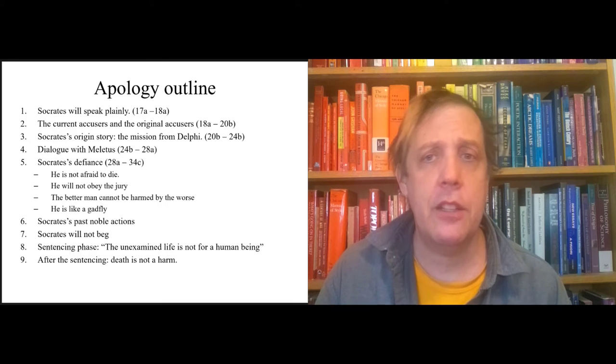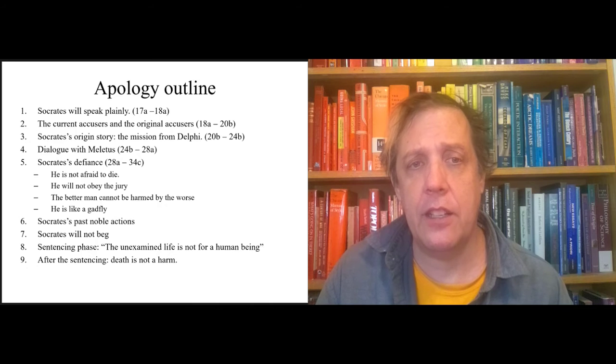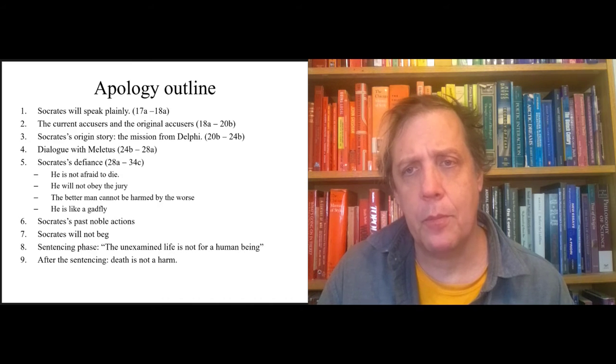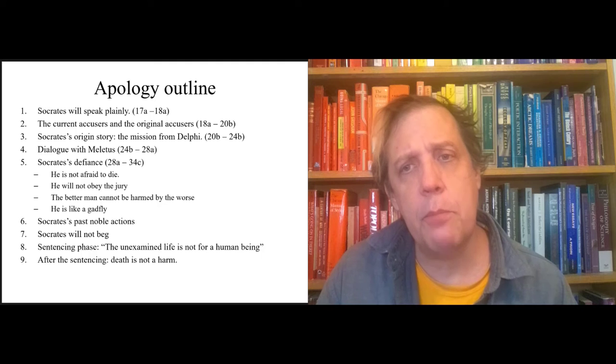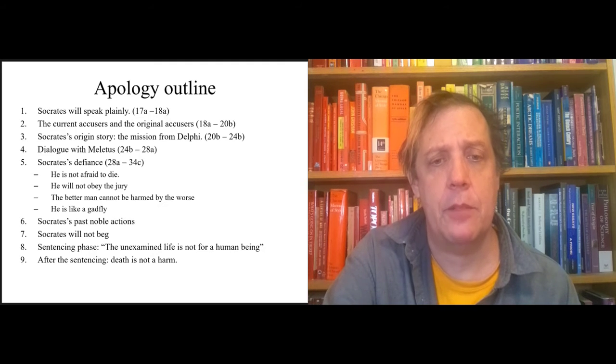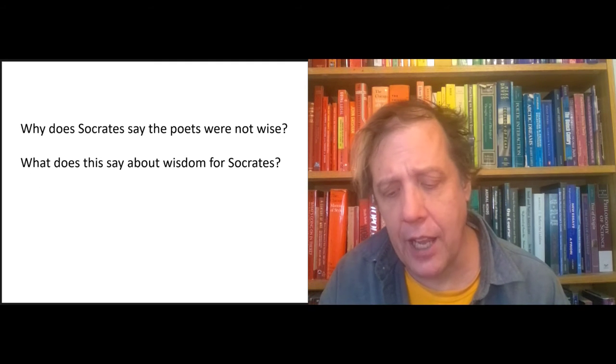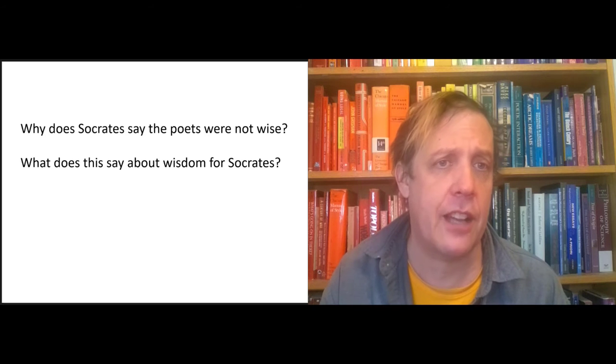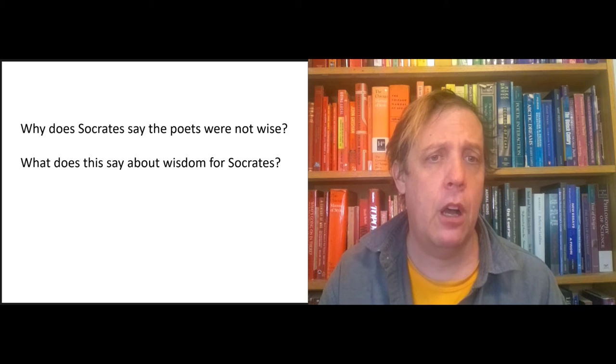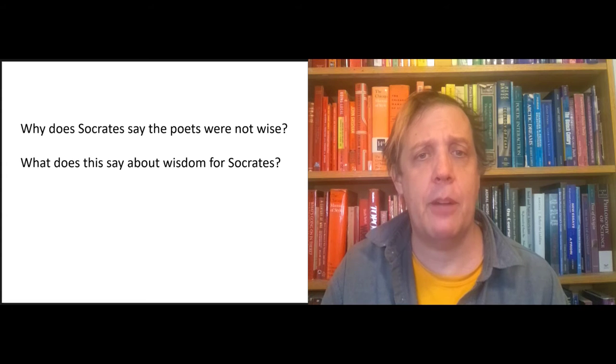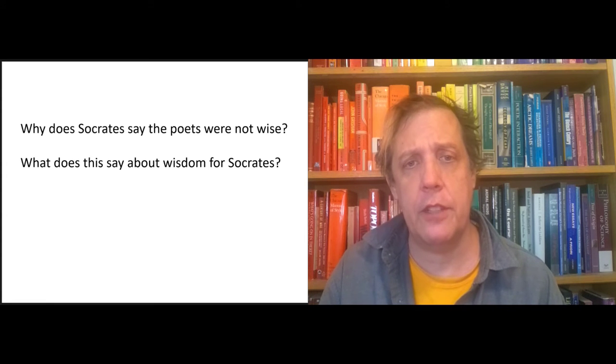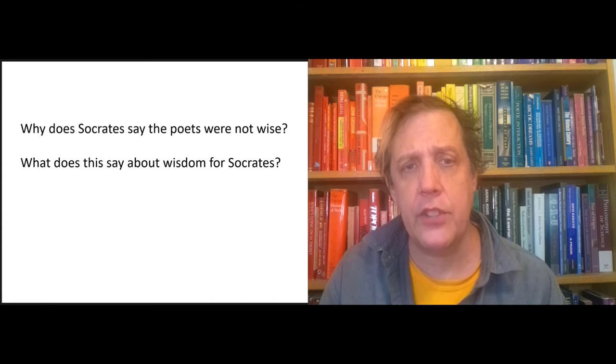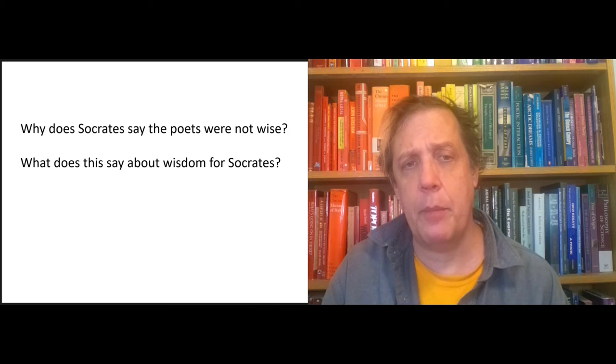So he goes about trying to find someone in Athens who is wiser than he is. And he goes to the politicians first. And it's clear that right away that they don't know anything. So then he goes to the poets and the craftsmen. And these two groups I had discussion questions in the exercises for you about. And each time I ask the same question: why does Socrates say these people are not wise? And what does this say about wisdom?